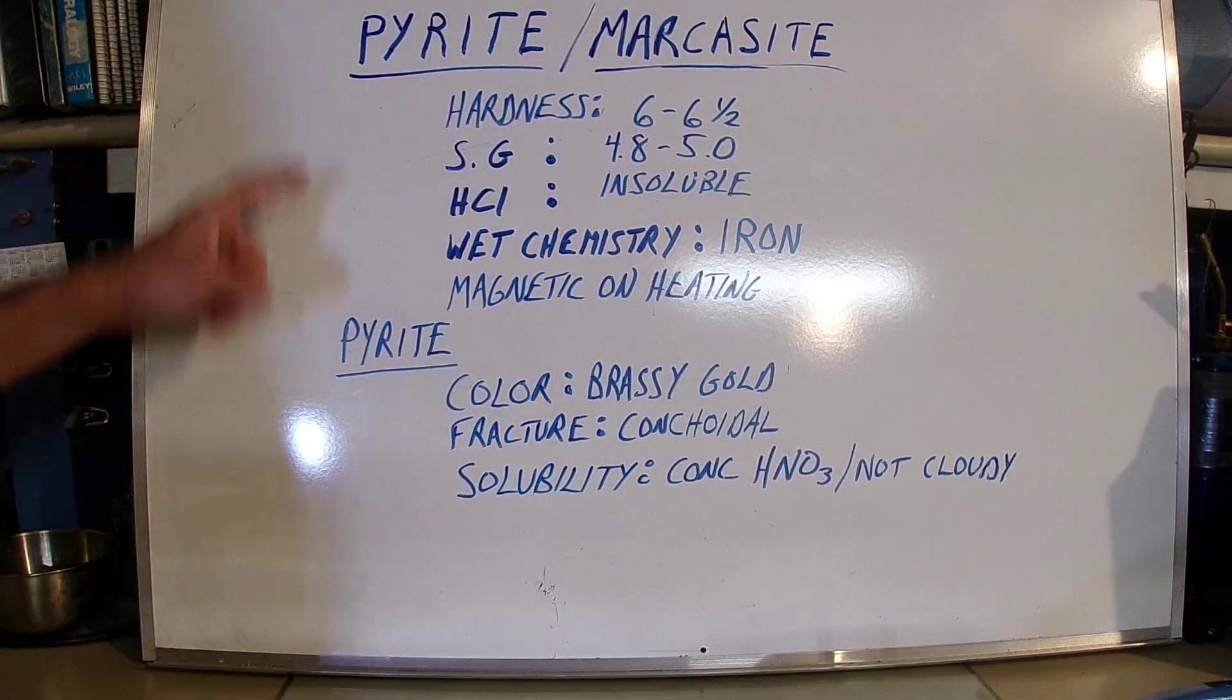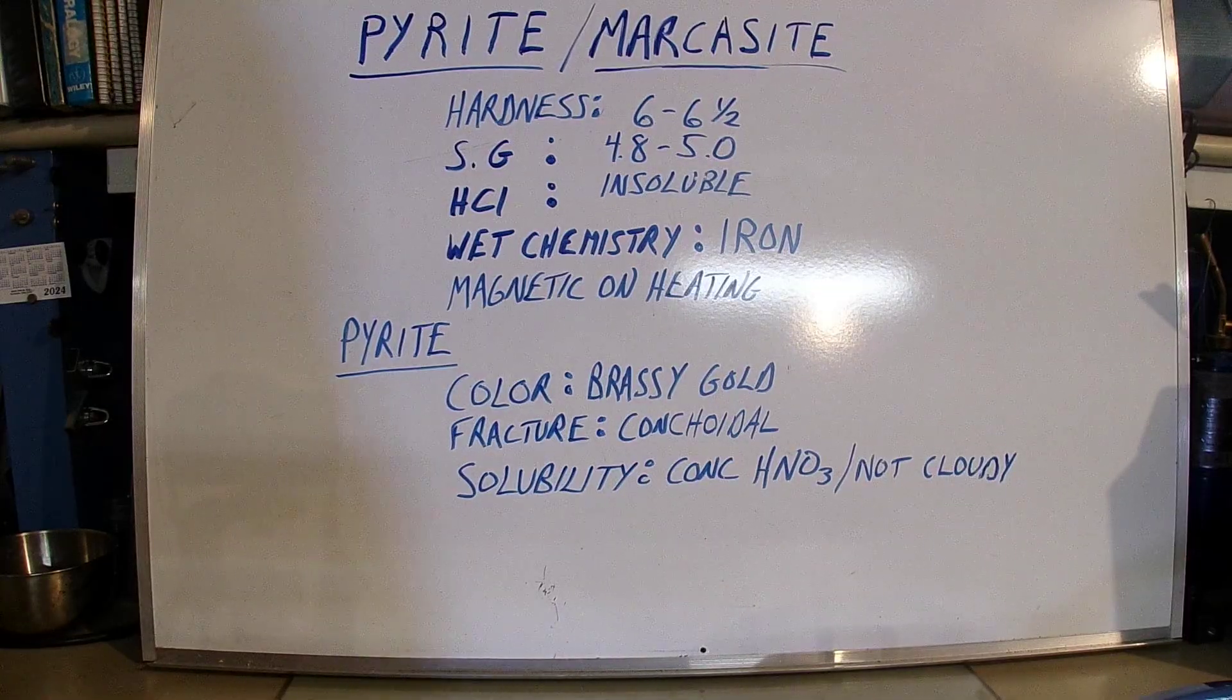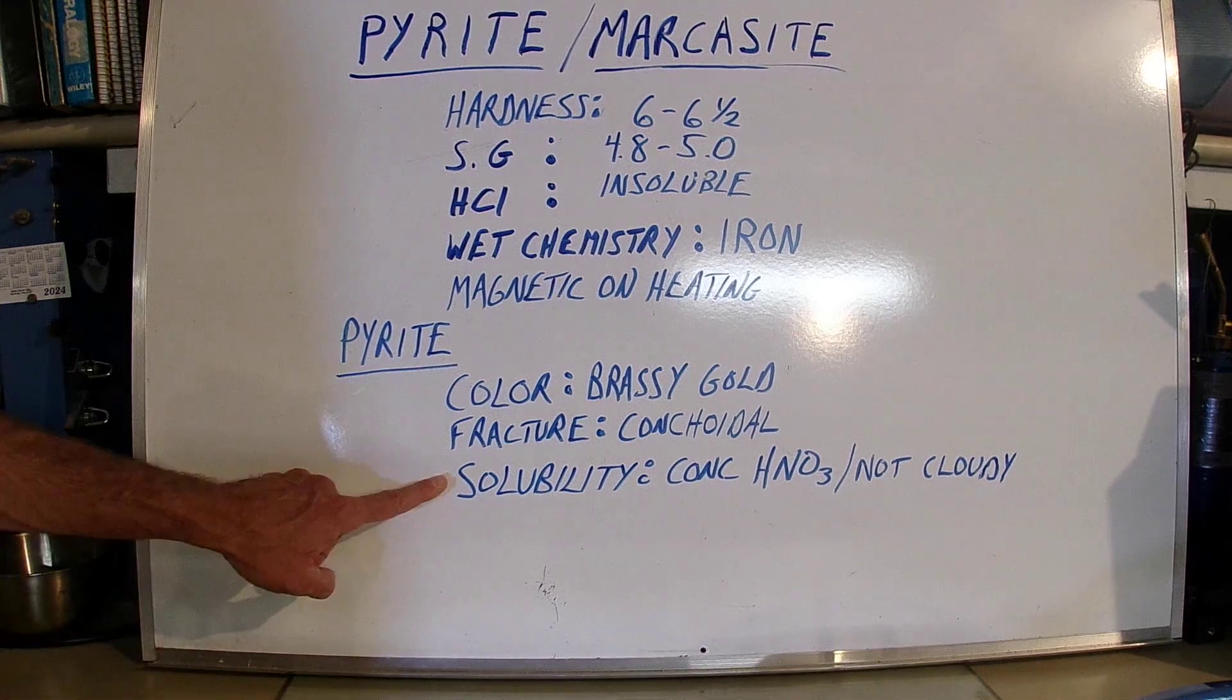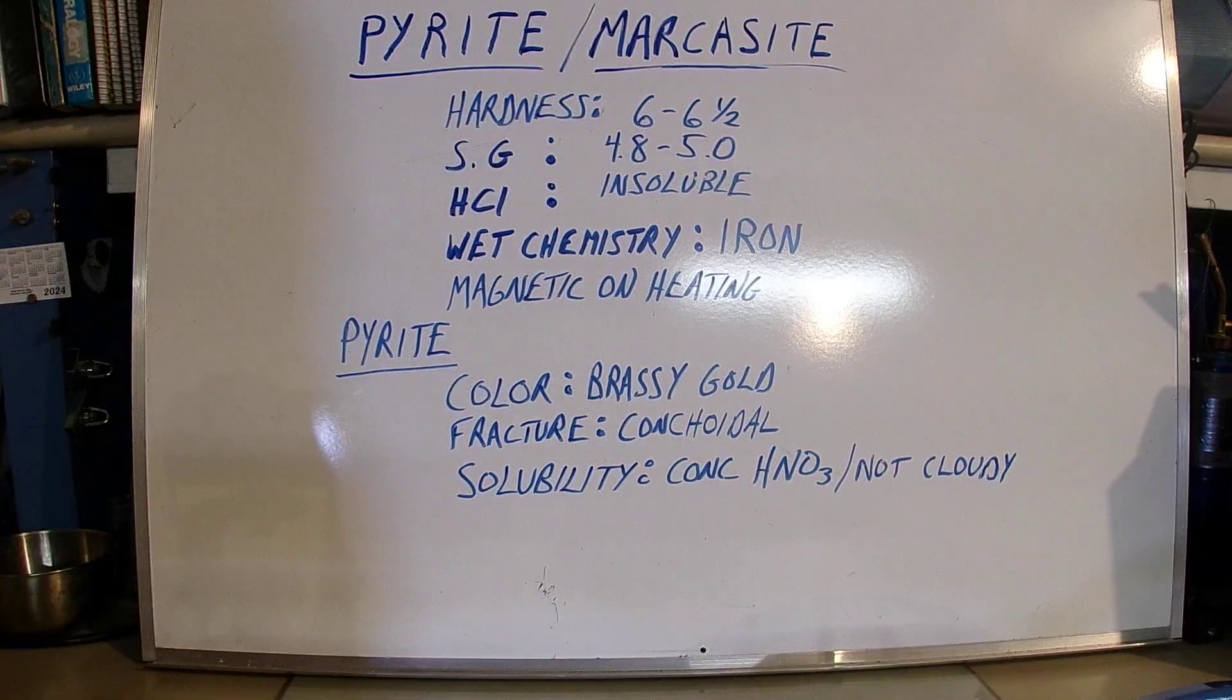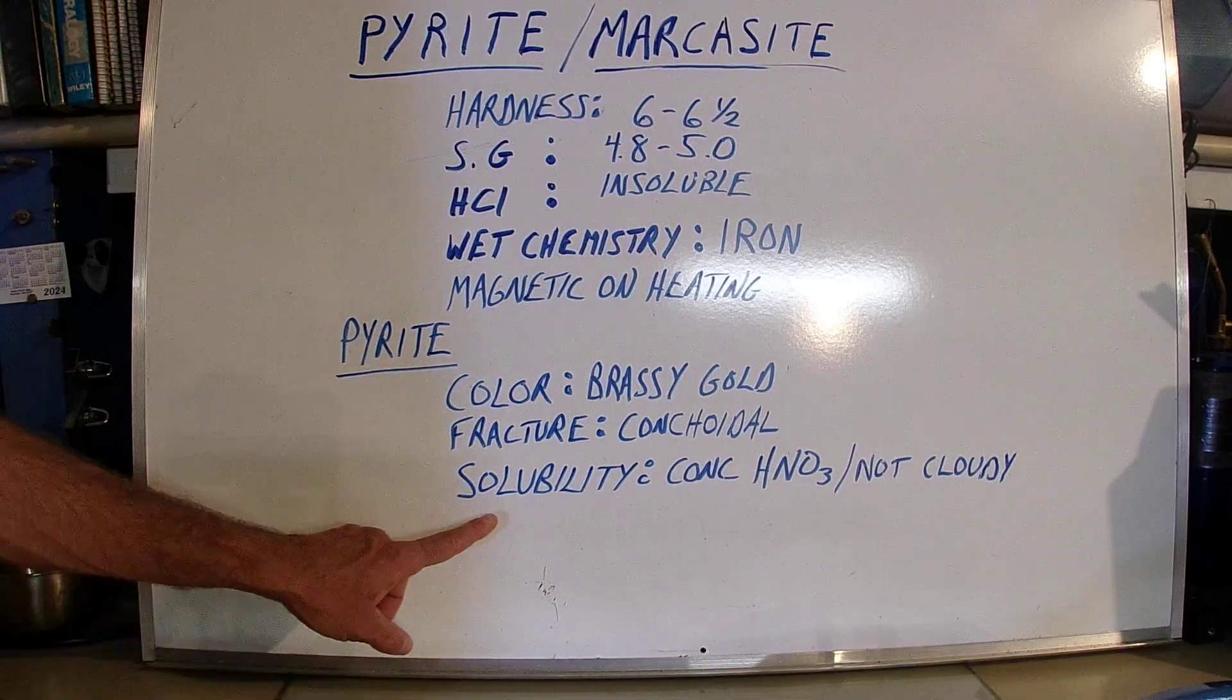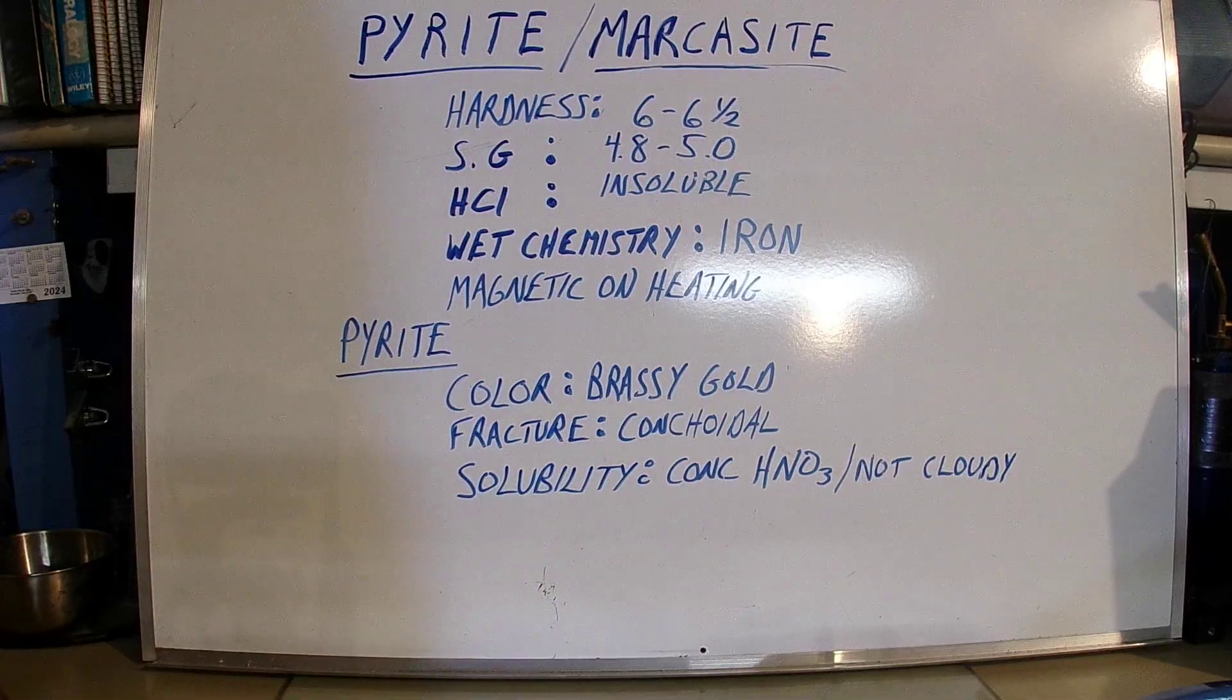The reason why I say it is pyrite rather than marcasite was the color. It's more of a gold or brassy color while marcasite is more of a silvery brassy color, a little bit lighter. From the fracture that I saw it looked kind of conchoidal and pyrite is conchoidal. Also the solubility, pyrite is soluble in concentrated nitric acid but not in dilute like marcasite will actually start to dissolve a little bit. Also after it's soluble, the pyrite solution is not cloudy while in marcasite it has some free sulfur which may make it a cloudy solution.